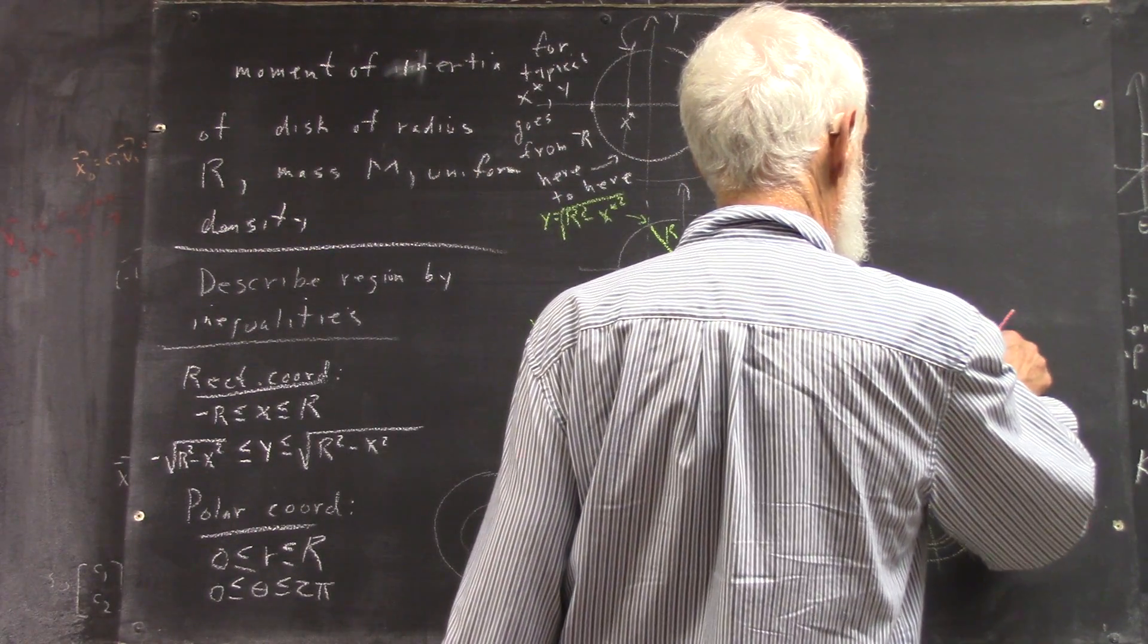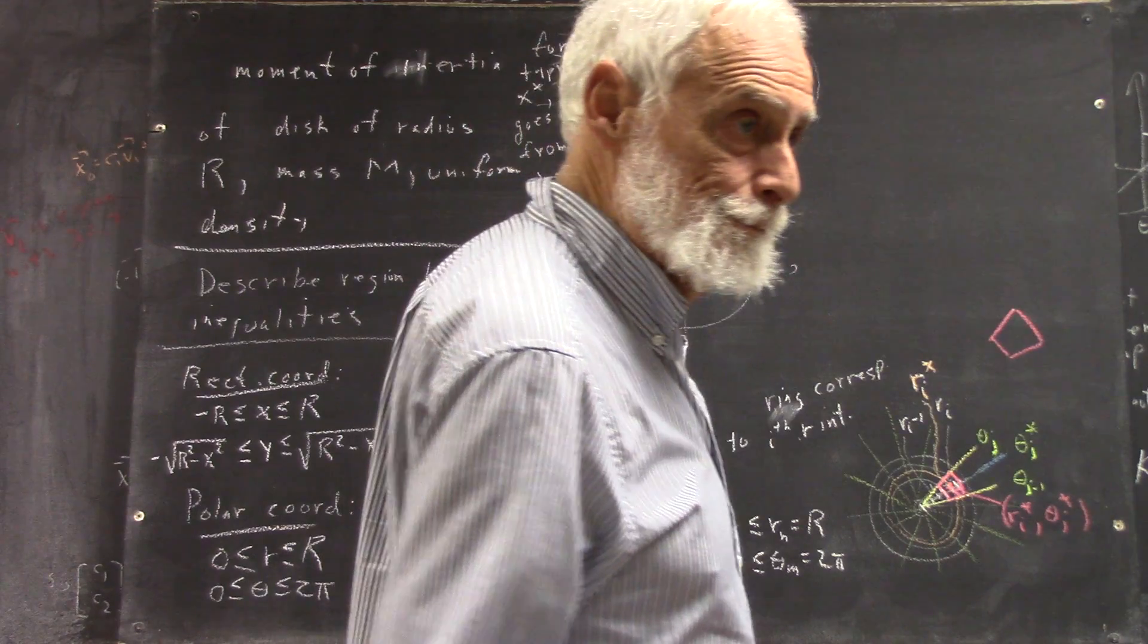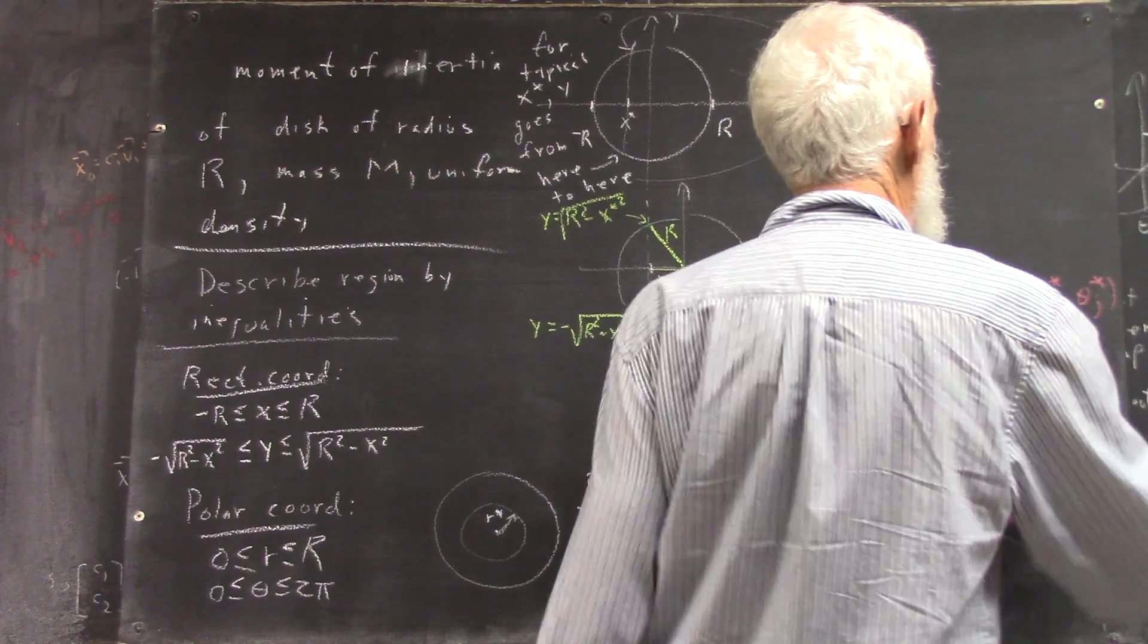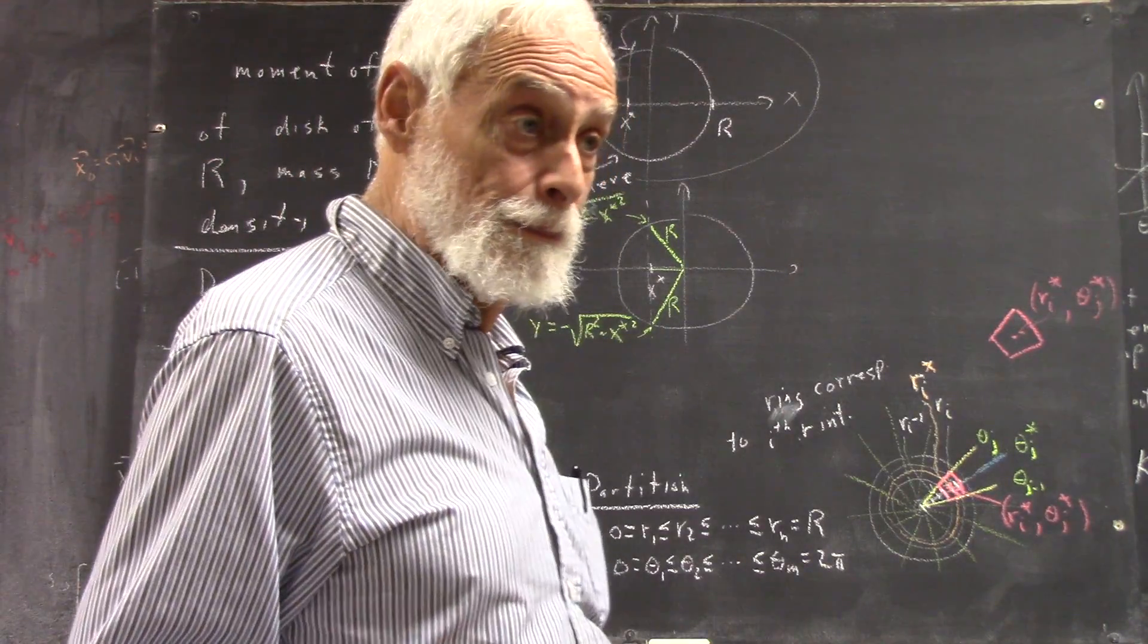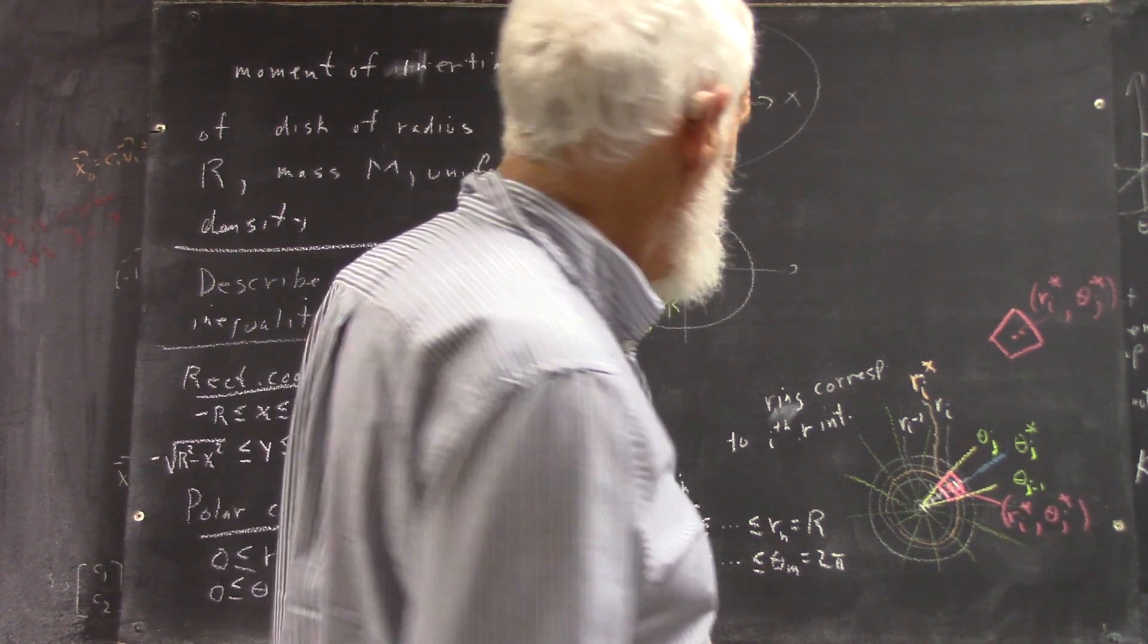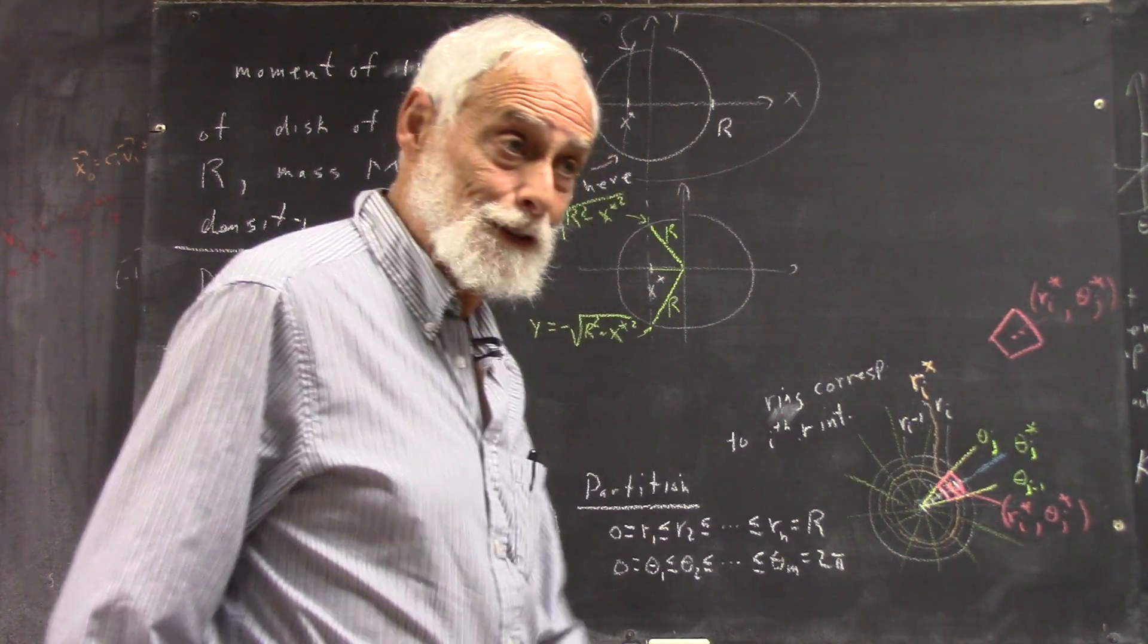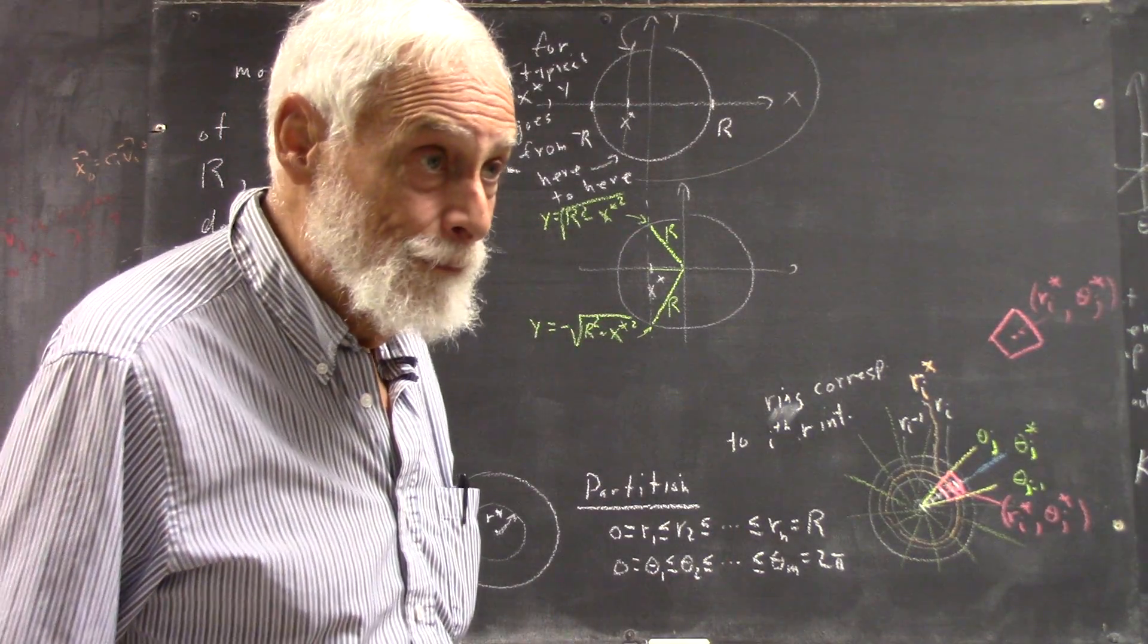Okay? In this increment, okay, and the increment is characterized by the point r i star theta j star. So anything we calculate that applies within this increment is going to be calculated at that sample point. We don't worry about other points. Okay? So, we want to calculate the moment of inertia of this increment. Well, there are a couple of steps, as you know from physics, okay? Like we've got to get its mass, and we've got to know its distance from the point of rotation. Okay? Or axis of rotation.